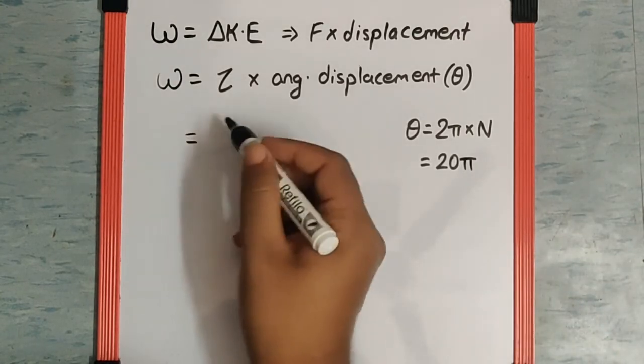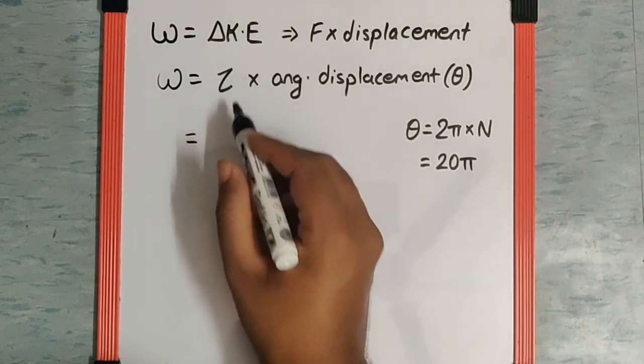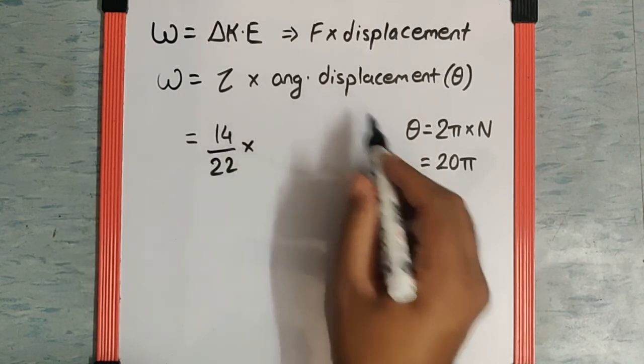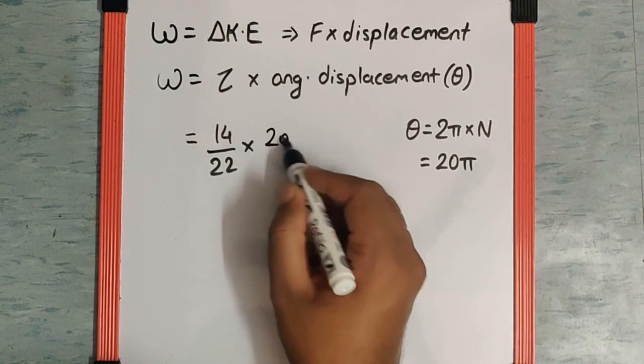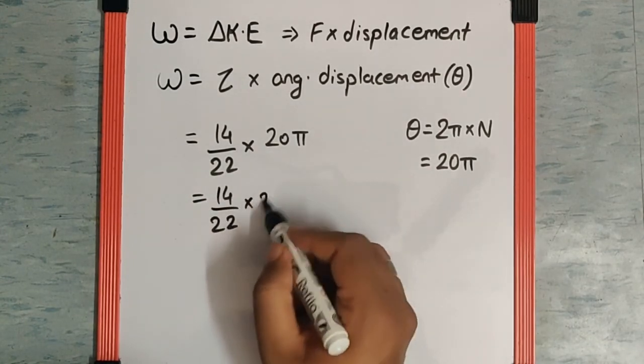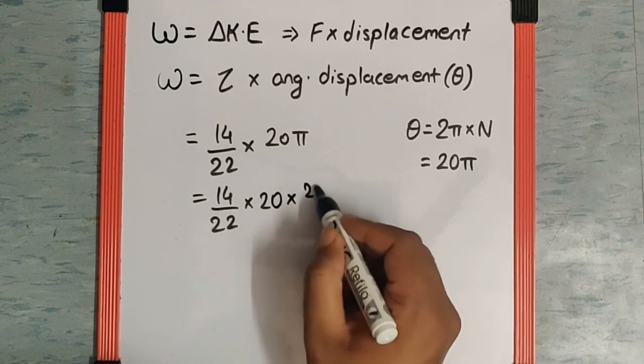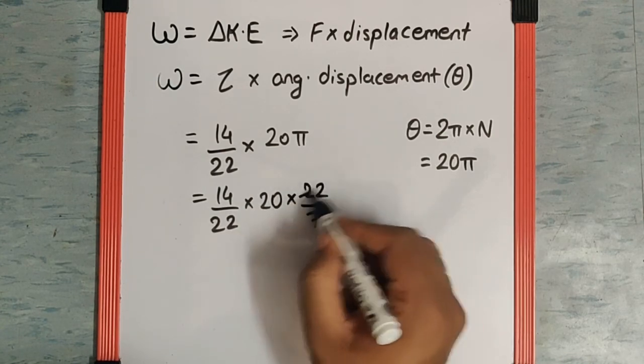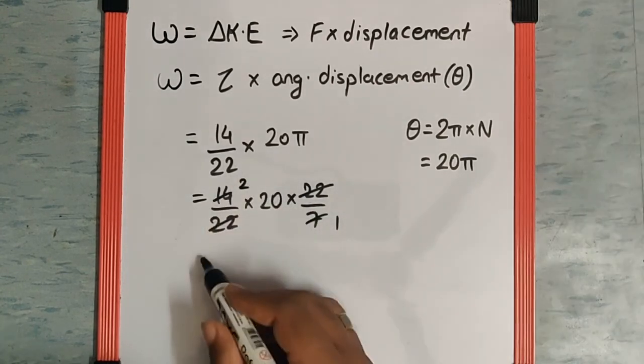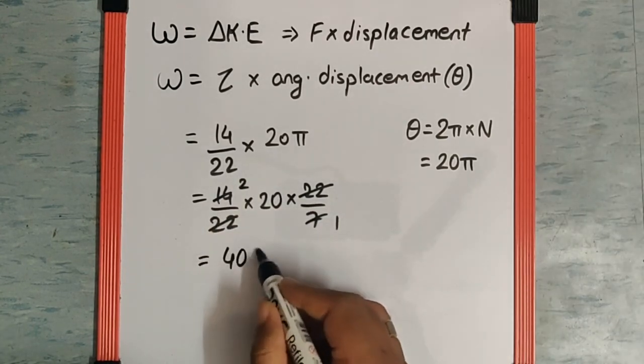So if we go with the substitution the torque is given as 14 by 22 and we got the angular displacement as 20 pi. So we can write 14 by 22 into 20 and pi as 22 by 7. So 22 gets cancelled, 7 into 2 is 14 that makes the value as 40 joule.